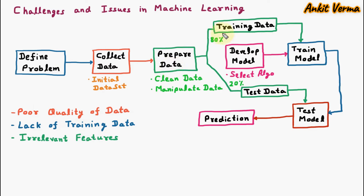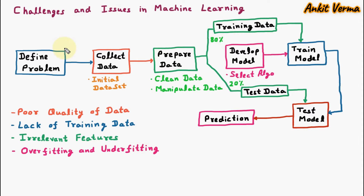The next challenge is irrelevant features. When we take the training data to train the model, many times there are irrelevant features in that training data which are not necessary. These unnecessary features are a challenge in machine learning.